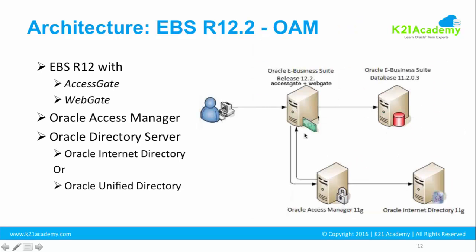To summarize the architecture: you have the user, Oracle Access Manager, a directory server (OID or OUD), and eBusiness Suite. The EBS database user IDs are kept in sync with OID or OUD using DIP — the Directory Integration Platform — which will be covered in subsequent lessons. WebGate acts as the policy enforcement point, and AccessGate revalidates the user and creates a session in eBusiness Suite. This is the complete EBS 12.2 with Oracle Access Manager architecture.